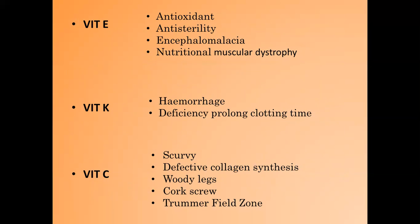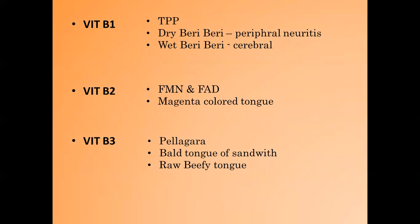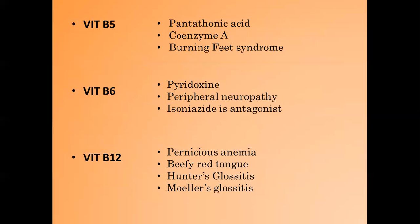Vitamin C deficiency causes scurvy, defective collagen synthesis, woody leg, corkscrew hair, and trümmerfeld zone. Deficiency of vitamin B1 causes TPP deficiency, dry beriberi that is peripheral neuritis, and wet beriberi that is cerebral neuritis. Vitamin B2 coenzymes are FMN and FAD, and its deficiency leads to magenta colored tongue. Deficiency of vitamin B3 causes pellagra, bald tongue of Sandwith, and raw beefy tongue. The B5 coenzyme is pantothenic acid and coenzyme A; its deficiency leads to burning feet syndrome.